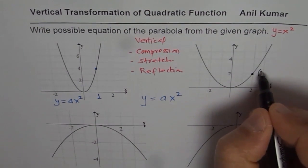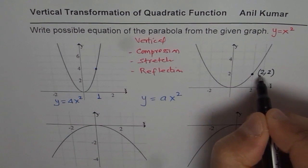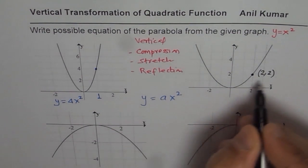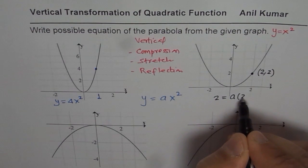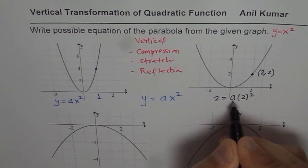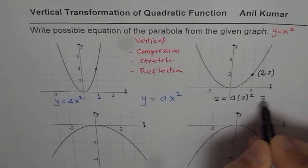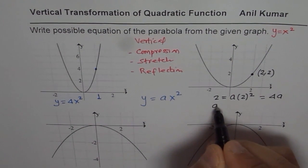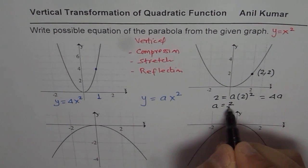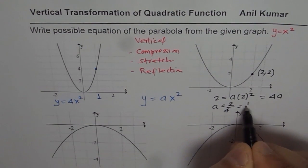If I substitute this point which is 2, 2 in the equation, I get y as 2 equals to a times 2 square. And from here, which is 4a. From here, 2 equals to 4a means a equals to 2 divided by 4 or half.